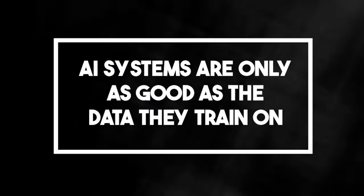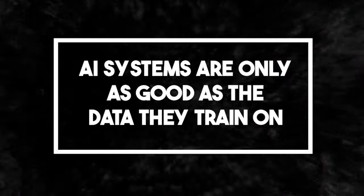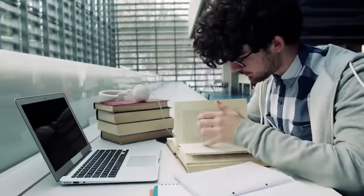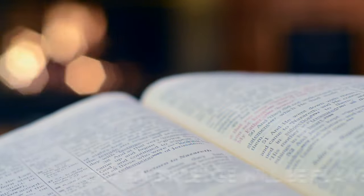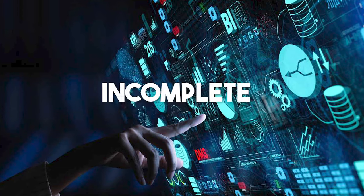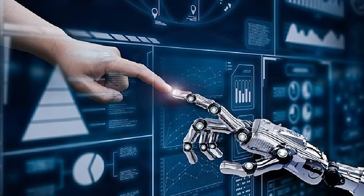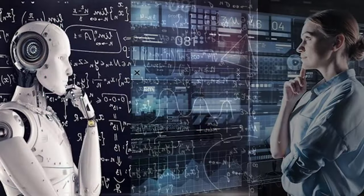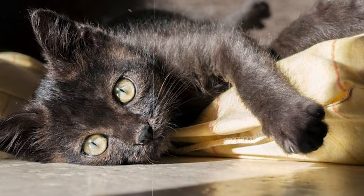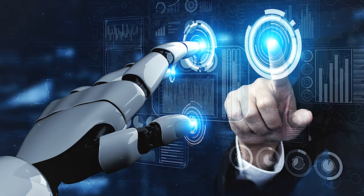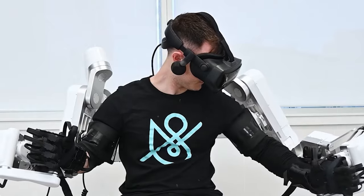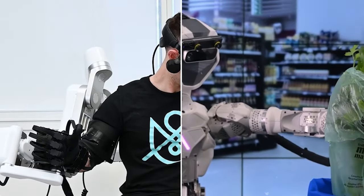Number 3: AI systems are only as good as the data they train on. Think about how humans learn — if we're taught incorrectly or if our learning materials have gaps, our knowledge will be flawed. Similarly, AI systems learn from data. If that data is biased, incomplete, or simply inaccurate, the AI's outputs will reflect those flaws. Let's say you're training an AI to recognize pictures of cats. If all the pictures you feed it are of black cats, the AI might struggle or even fail to recognize a white cat or a tabby. The AI isn't dumb — it's just working with what it was given.